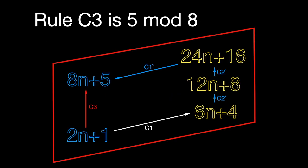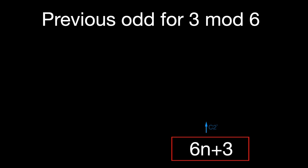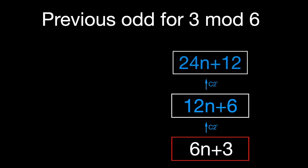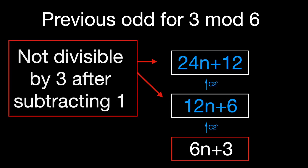We've already seen that the C3 rule results in a 5 mod 8 value preceding any odd number, but if we look at the predecessor rules for C1 and C2 alone, we see that they have 3 outcomes for their predecessors. This is because odd numbers divisible by 3 will not remain divisible by 3 after they are reduced by 1, and so the inverse of rule C1 never applies to them.